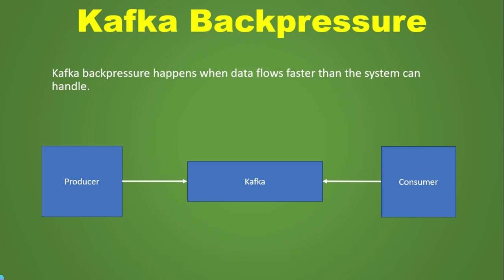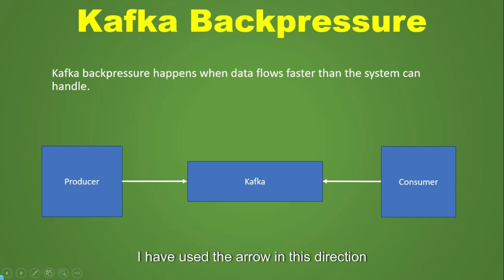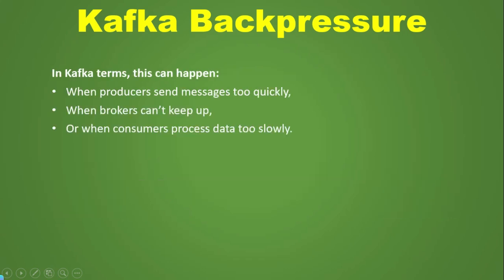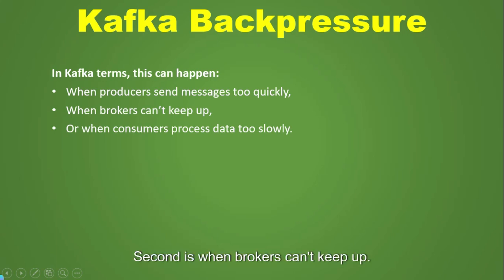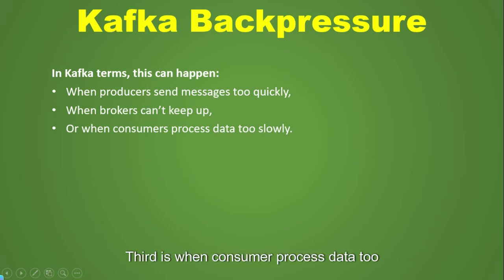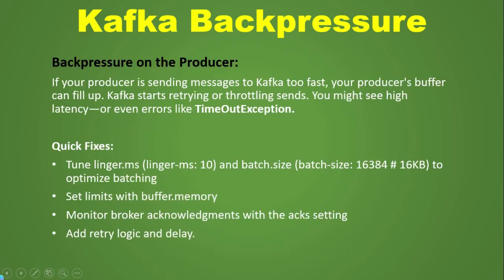That problem is called Kafka backpressure. As you can see, the arrow is in this direction because Kafka works on the pull-based approach. Kafka backpressure can happen in three ways: first, when producers send messages too quickly; second, when brokers can't keep up; and third, when consumers process data too slowly.